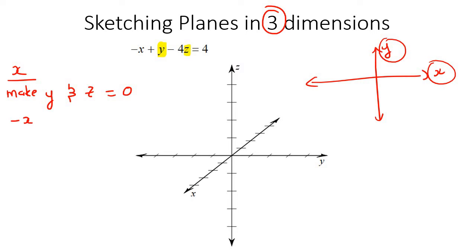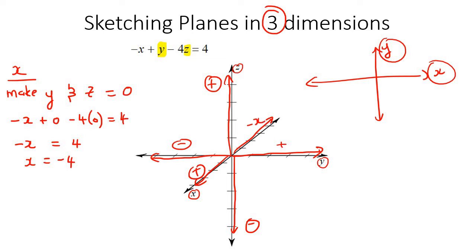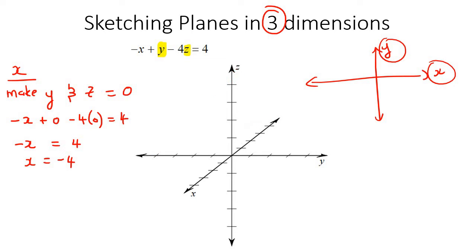So your equation would look like this: minus x plus zero minus four times zero equals four. That gives you minus x equals four, so x is negative four. You go onto the x-axis and go to negative four. The letters on the diagram tell you where the positive axis is — so the positive y is one side, the negative y the other; positive z and negative z; positive x and negative x. So for negative four, you go on the negative x-axis and count to four: one, two, three, four. Put a little dot there.